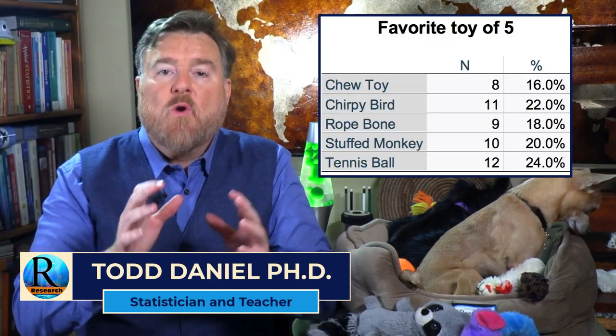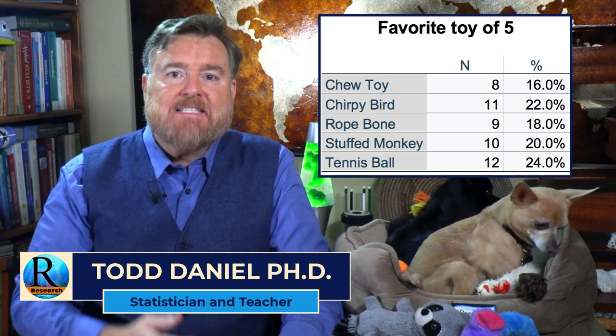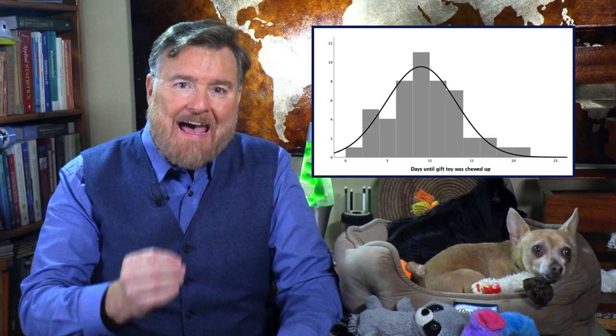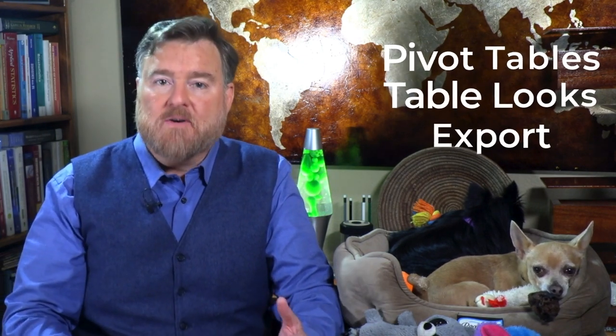All along this journey of learning to use SPSS, we have been creating output. When we create tables, that is SPSS output. When we ask for graphs and descriptive statistics, that is SPSS output. With every new click of the mouse, the output window opens and we have more output. Now we will learn what we can do to improve that output with options like pivot tables, table looks, and how to export both our output and our data in IBM SPSS Statistics.